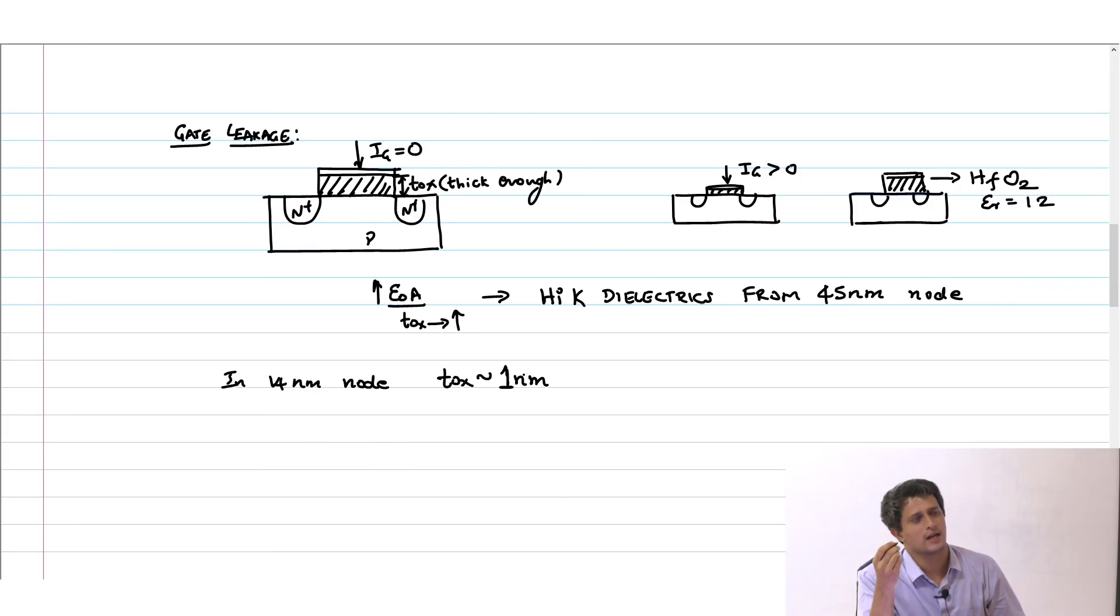Typically as a designer now you do not have to worry about gate leakage so much unless you are doing some non-volatile memories and stuff where you introduce defects. But you should be aware that this could be a potential problem and you cannot take it for granted that the gate current is 0. Any questions?